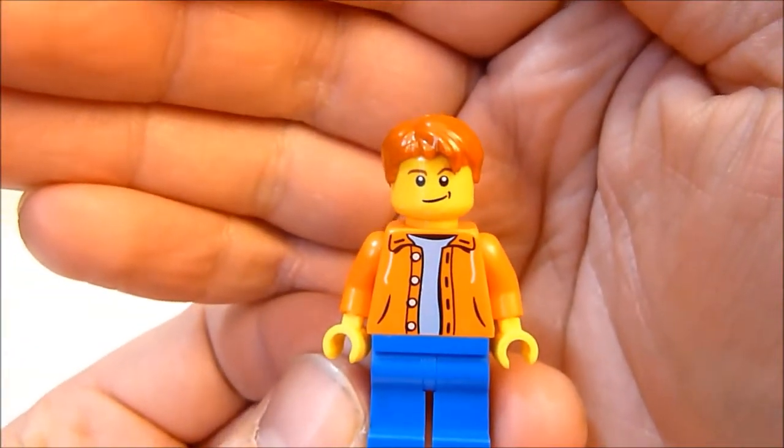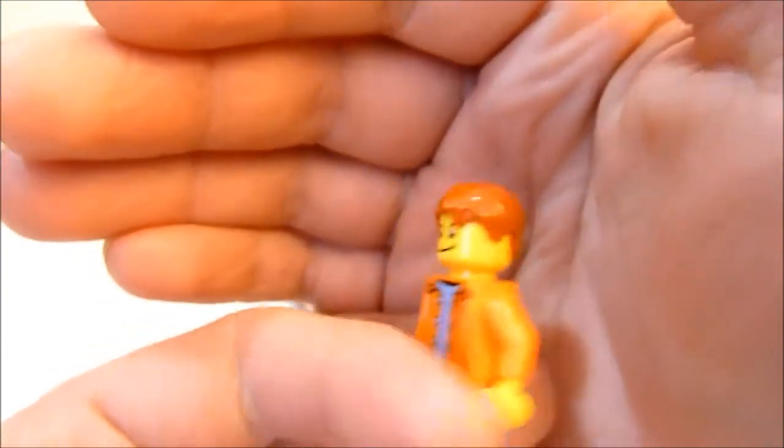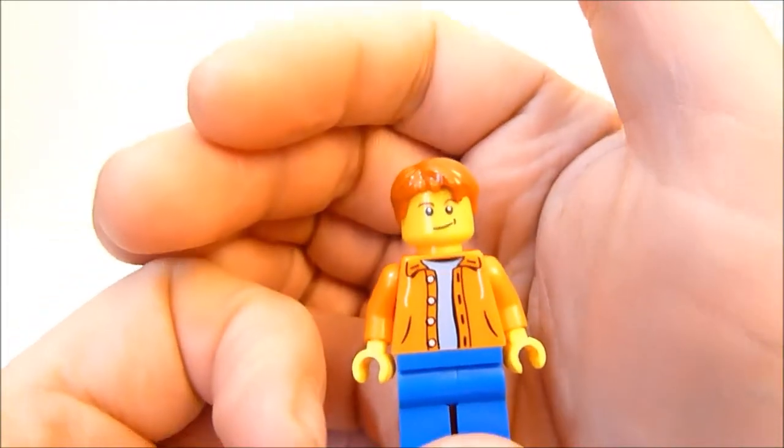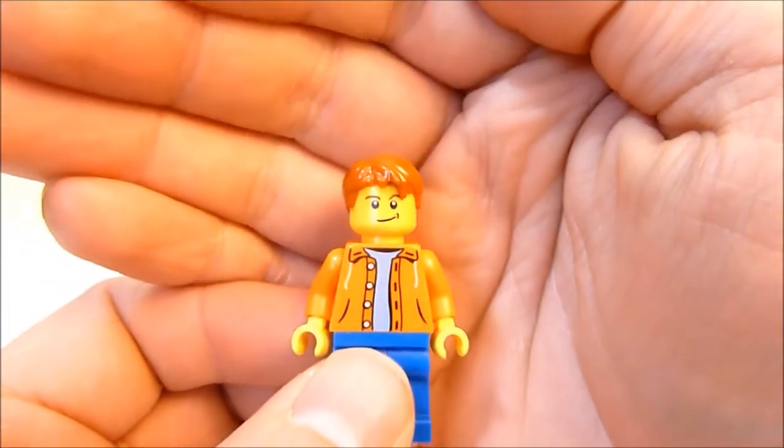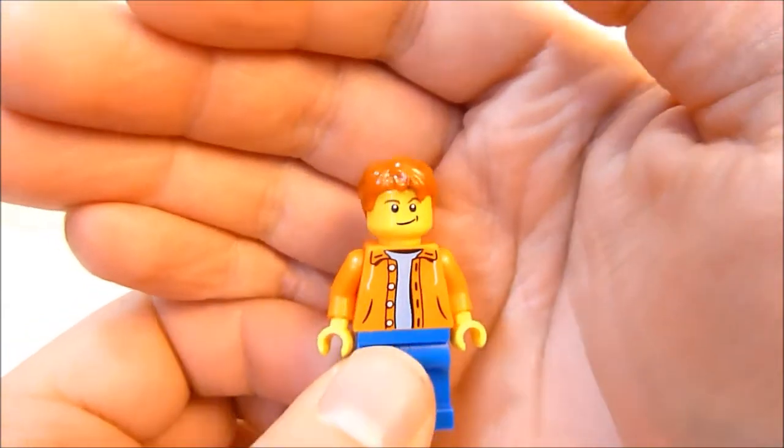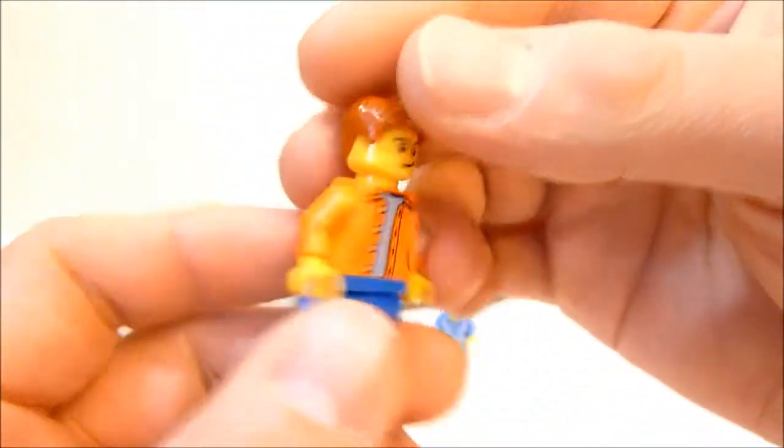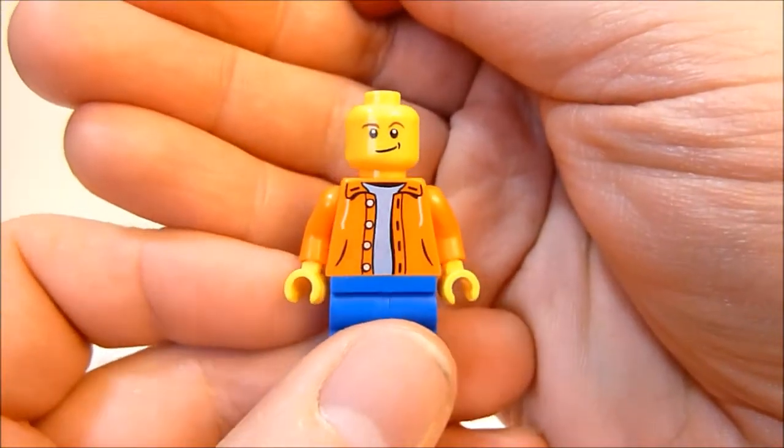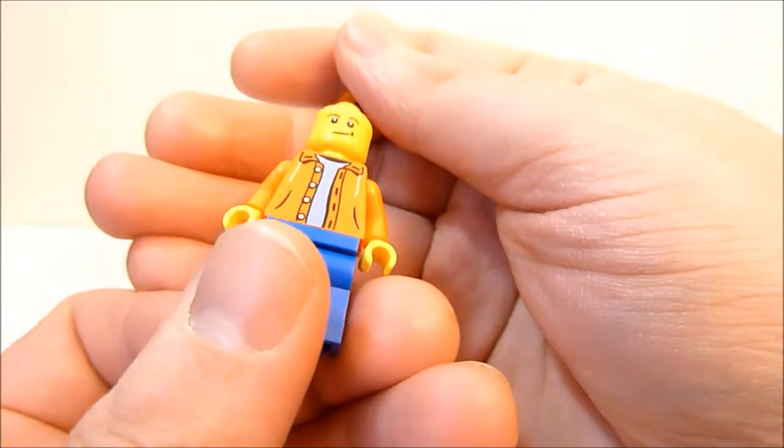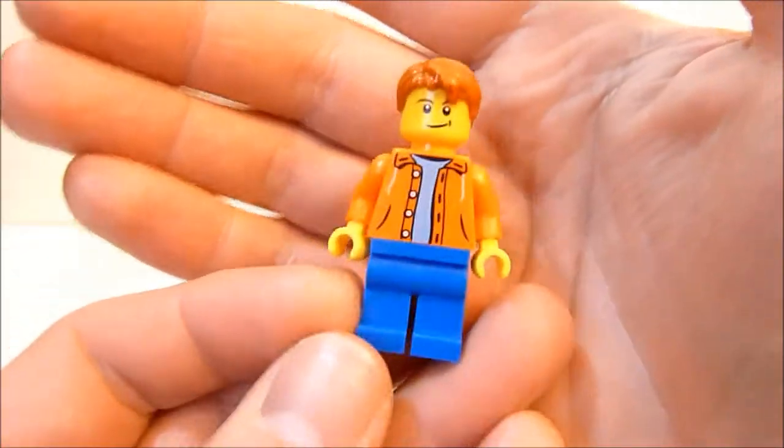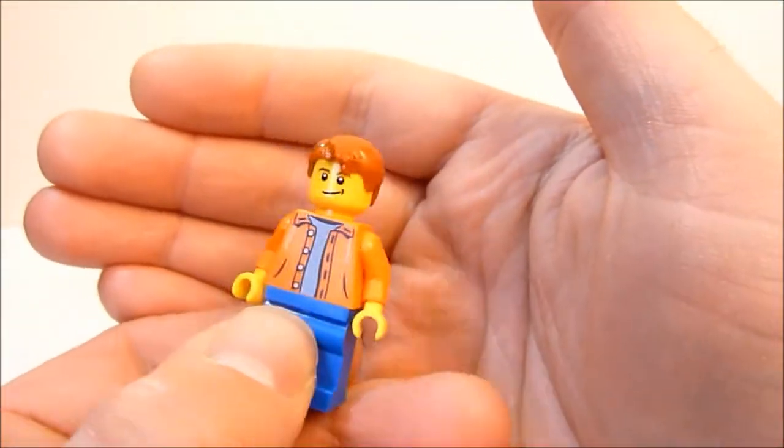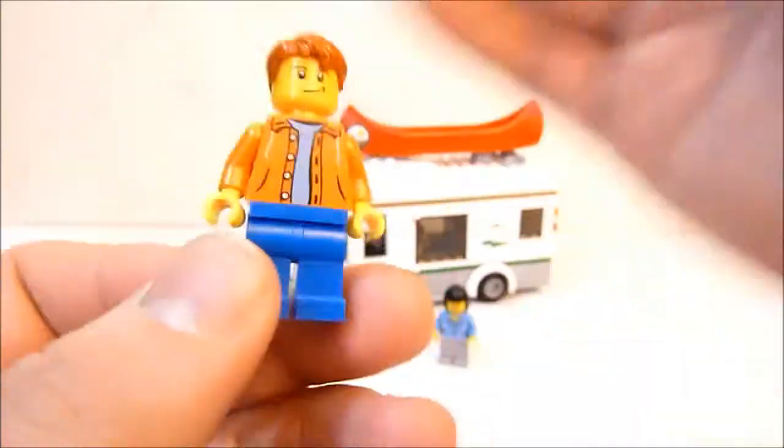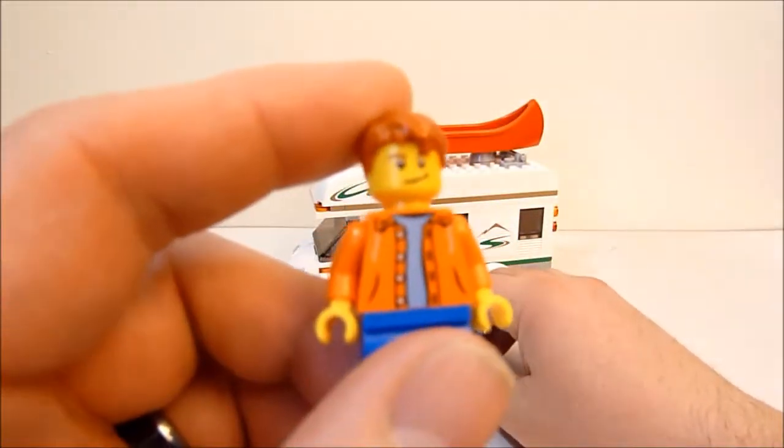So very standard minifig face that we've seen many times before. And pretty familiar with this hair piece as well. It's in kind of like a burnt orange, sort of light brownish kind of color. May not be coming out so terribly well just with the lighting setup I have here at the moment. But you get the idea. He's got a very nice orange hoodie on here and a blue t-shirt underneath. Very nice little hood printing on the back. No printing on the back of the head. And he's just got some blue jeans going on there. And he just looks very comfortable to be outdoors and just hanging out. And really nice print overall. I like the hoodie there.